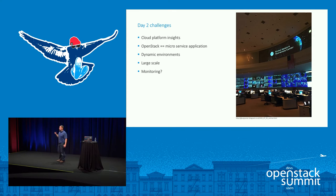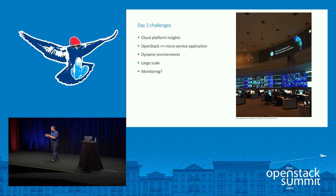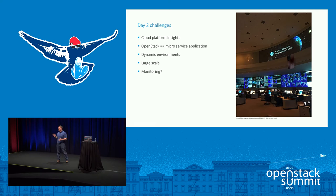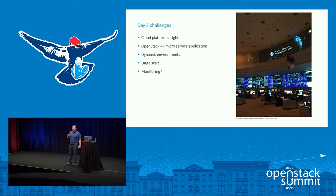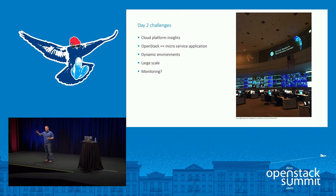While on one hand you get better control of your cloud platform compared to AWS and get insights into what's going on, on the other hand you also have to fix it if something goes wrong. Those are the two sides of the coin with running your own private cloud platform. The challenges we see are dynamic application environments on top of OpenStack, dynamic auto-scaling with Heat, for example, at the OpenStack cluster level.